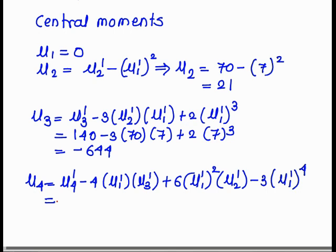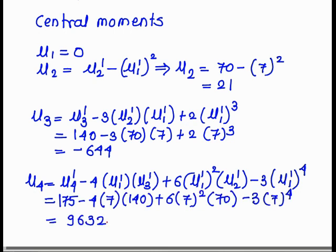Mu 4 is equal to mu 4 dash minus 4 times mu 1 dash times mu 3 dash plus 6 times mu 1 dash squared times mu 2 dash minus 3 times mu 1 dash raised to the power 4. After substituting the values we get mu 4 is equal to 9632. This is the fourth central moment.